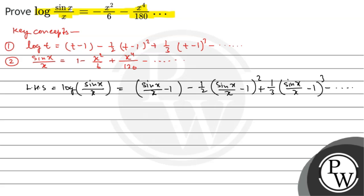Now we substitute the expansion of sine x divided by x. The left hand side becomes: the ones cancel out, giving minus x squared divided by 6 plus x to the power 4 divided by 120, minus so on.